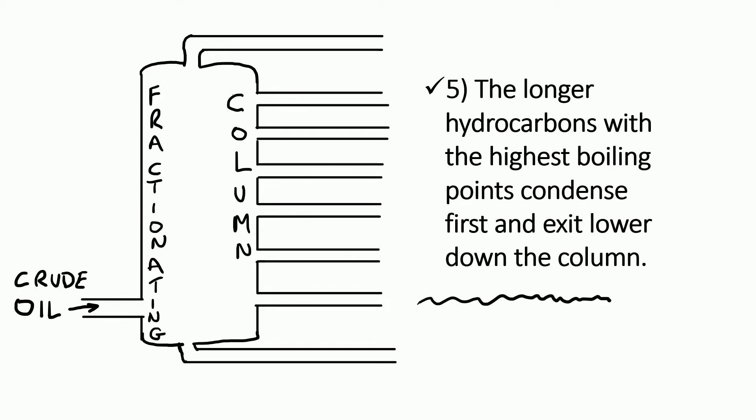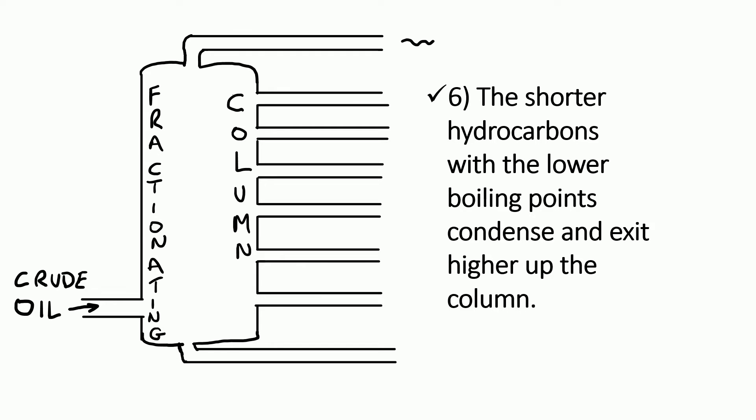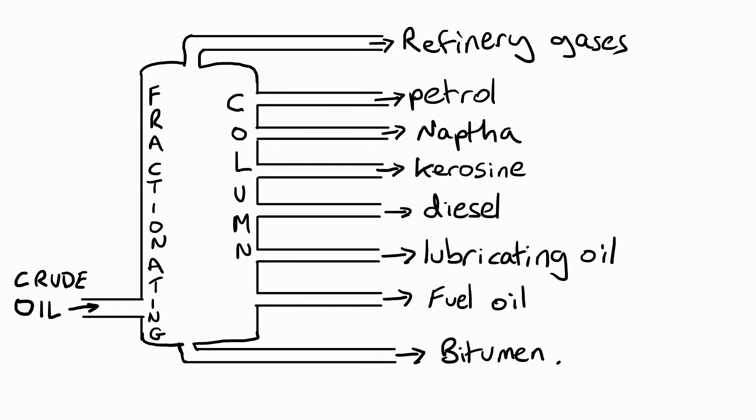The longer hydrocarbons with the highest boiling point condense first, because it doesn't have to cool down much to get down to their higher boiling point, and these exit lower down the column. The shorter hydrocarbons with the lower boiling points condense and exit higher up the column. So out of each pipe coming out of the side of the fractionating column, you've got fractions of hydrocarbons of different sizes, with the shortest ones at the top and the longest ones towards the bottom, and these are useful products.